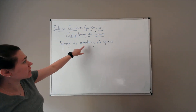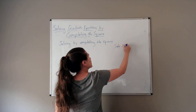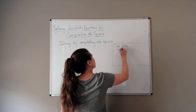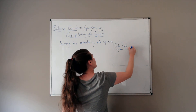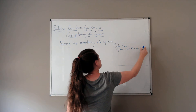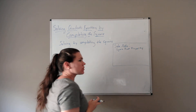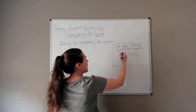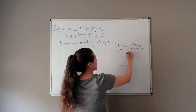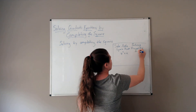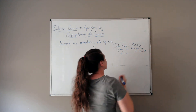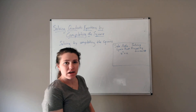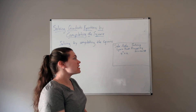Now we are going to start solving by completing the square. But first we need a side note: the square root property. We'll look at solving by taking the square root.